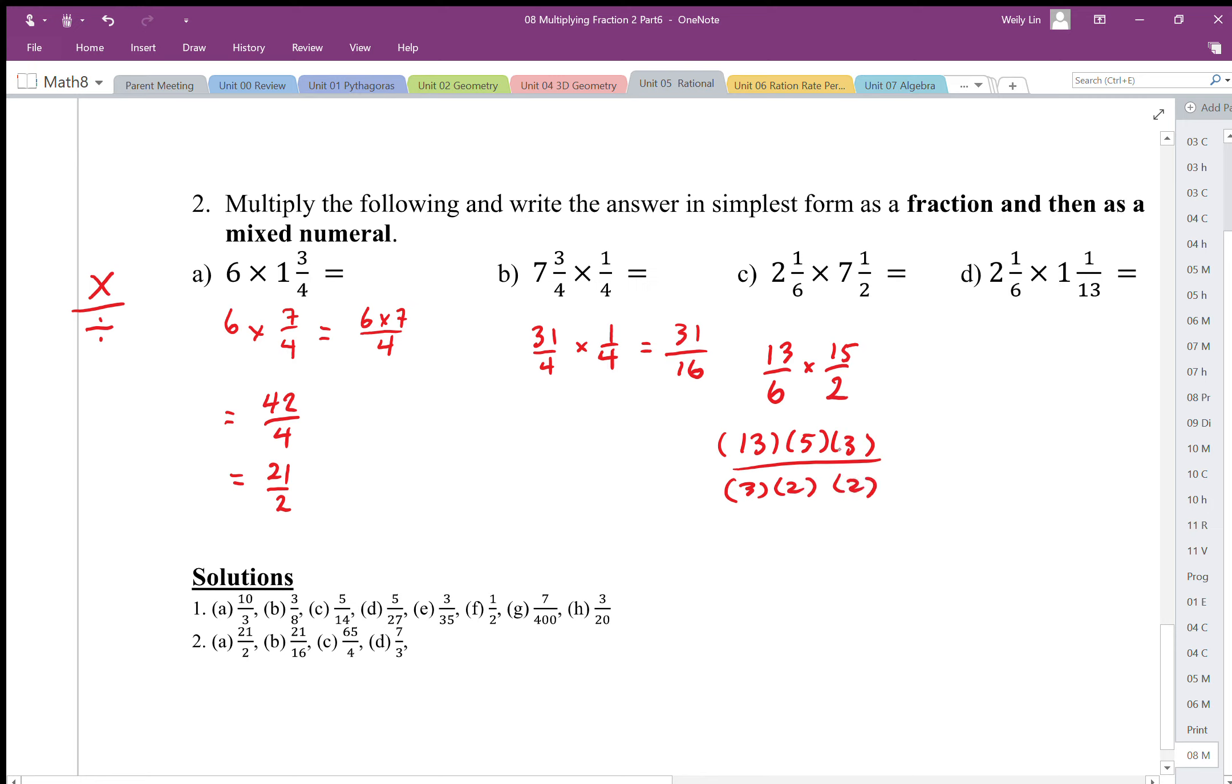We have 2 here so this times 3 divide 3 cancels out. 13 times 5 is 65 and in the denominator we have 4. We can again keep track of our solutions when we do this.